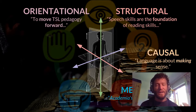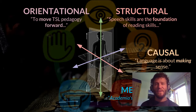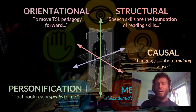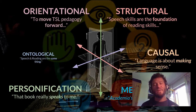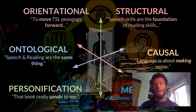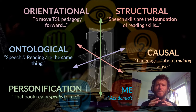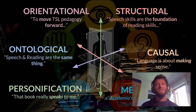We have metonymy — 'academia's focus is purely textual.' We have personification — 'the text really speaks to me,' or 'something really speaks to me.' And ontological metaphors. So there's a whole range of these kinds of metaphors.